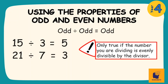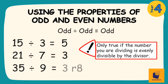However, if the odd dividend isn't evenly divisible by the odd divisor, this condition will not be true. Instead, I will get an answer with a remainder. For example, if I have 35 divided by 9 — an odd divided by an odd — because 35 is not evenly divisible by 9, instead of getting an odd number as an answer, I will get 3 remainder 8.